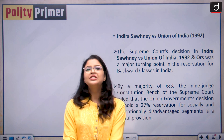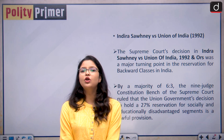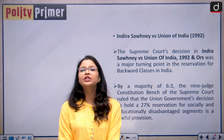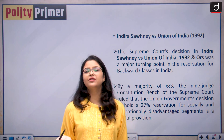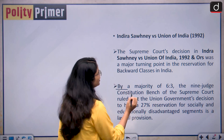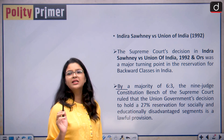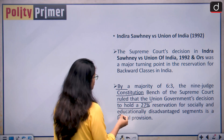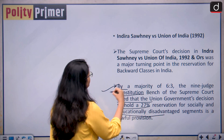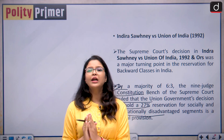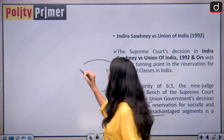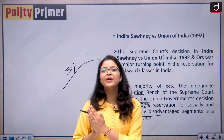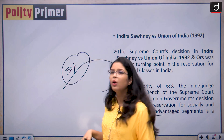The Indra Sawhney versus Union of India case changed the landscape of reservations in India. The Supreme Court decided the constitutional validity of the reservation given to the OBC community and upheld the 27% reservation. By a majority of 6 to 3, the 9-judge constitution bench ruled that the union government's decision to hold 27% reservation for socially and economically disadvantaged segments is a lawful provision. However, this case also capped the total reservation at 50%, meaning you cannot reserve more than 50% of seats in educational institutions or government jobs.